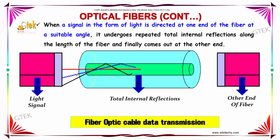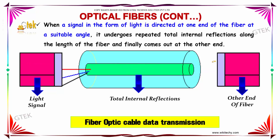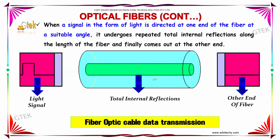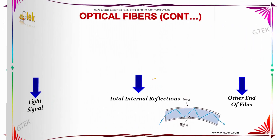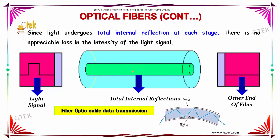When a signal in the form of light is directed at one end of the fiber at a suitable angle, it undergoes repeated total internal reflection along the length of the fiber and finally comes out of the other end. Since light undergoes total internal reflection at each stage, there is no appreciable loss in the intensity of the light signal.